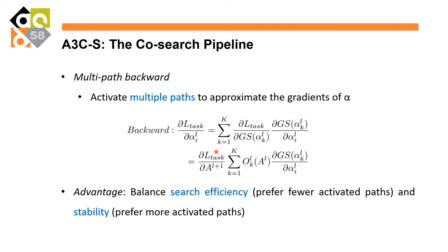For the backward pass, we activate multiple pathways for updating the architecture parameters alpha, which speeds up convergence to faster identify a good architecture compared to single-path forward. This balances search efficiency, which prefers fewer active pathways, and stability, which prefers more. We activate k pathways during the backward process and estimate gradients of the Gumbel Softmax sampling via a straight-through gradient estimator to make the process fully differentiable. In this work, we set k equal to 2 to balance search efficiency and variance.